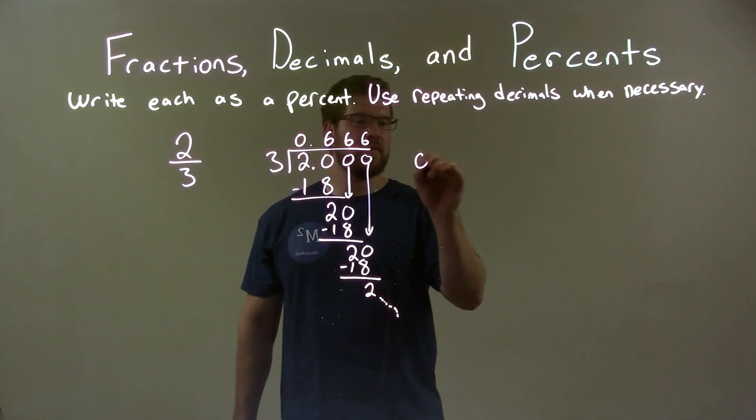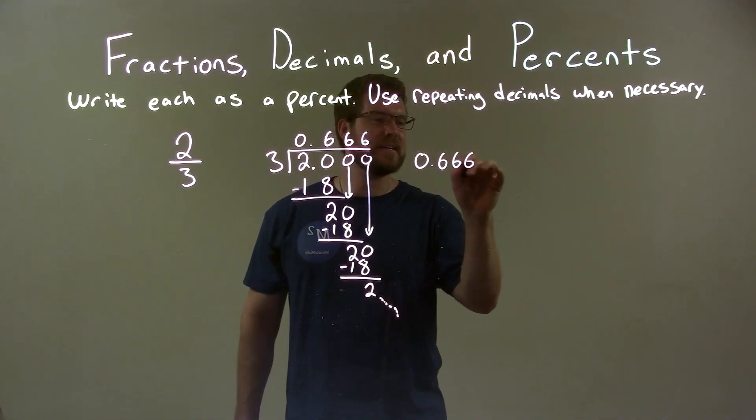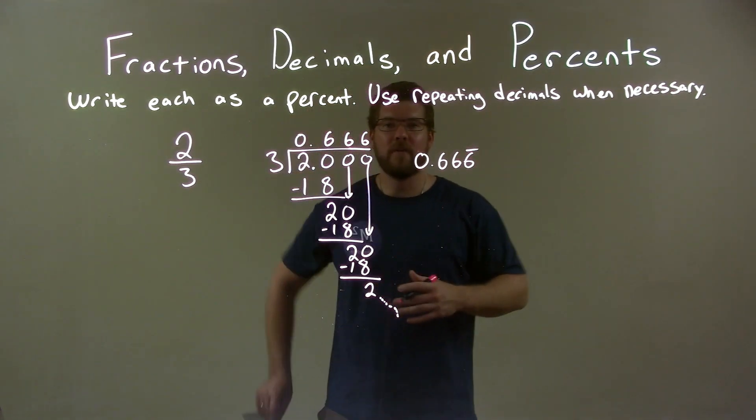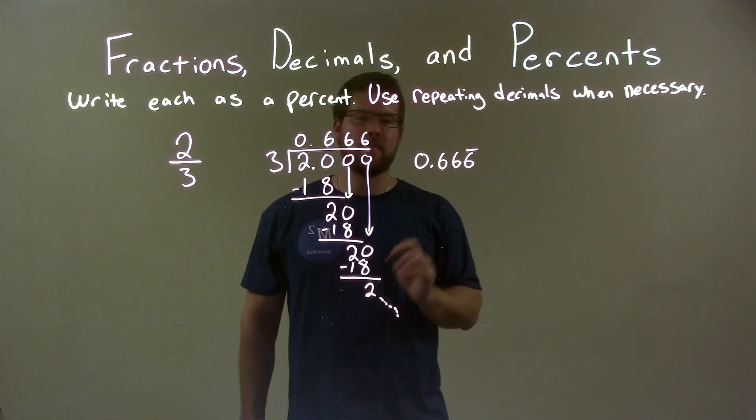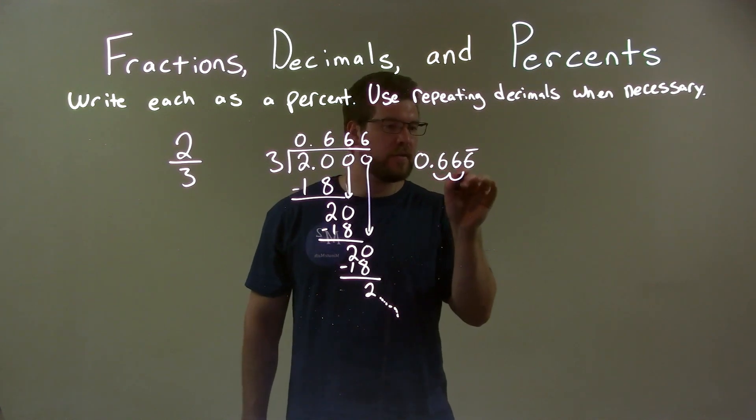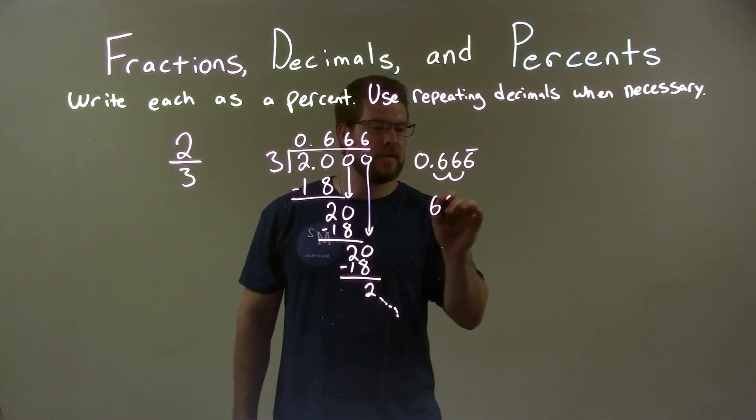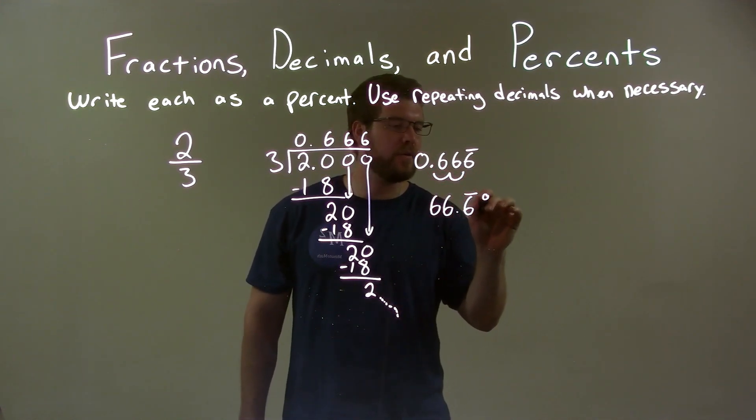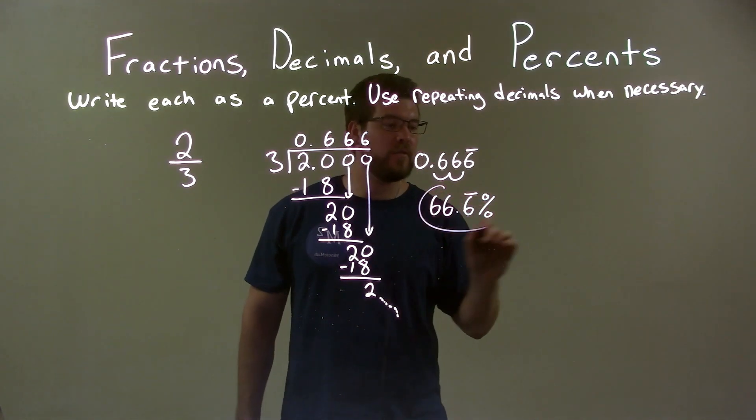So our decimal is 0.666 repeating. Well if I want to write that as a percent, I just take this decimal place, I move it two spots to the right, and I'm left with 66.6 repeating percent. That is our final answer.